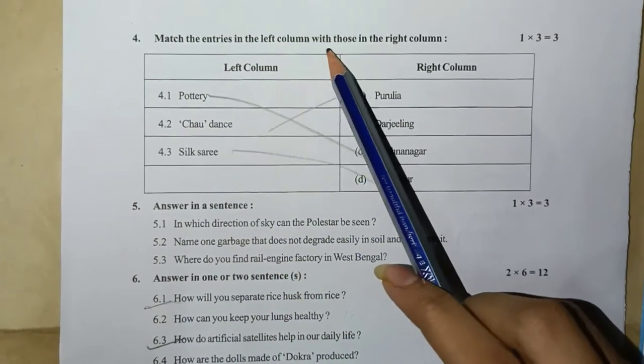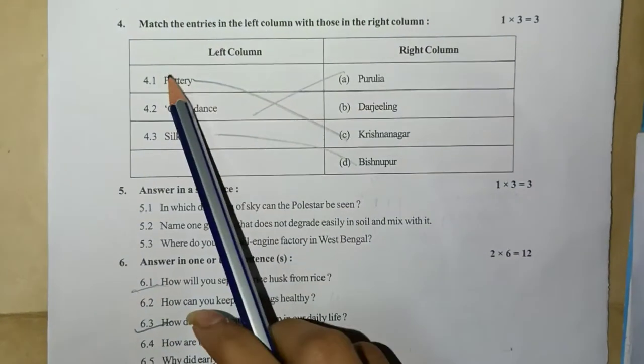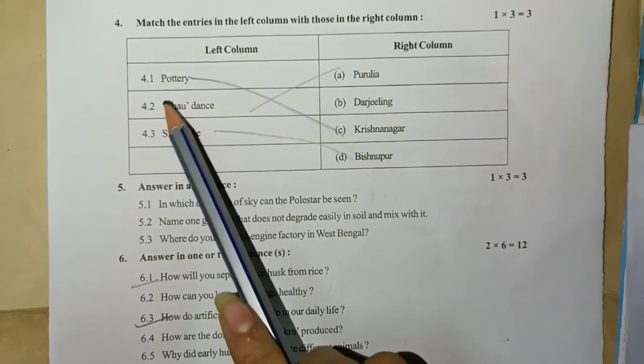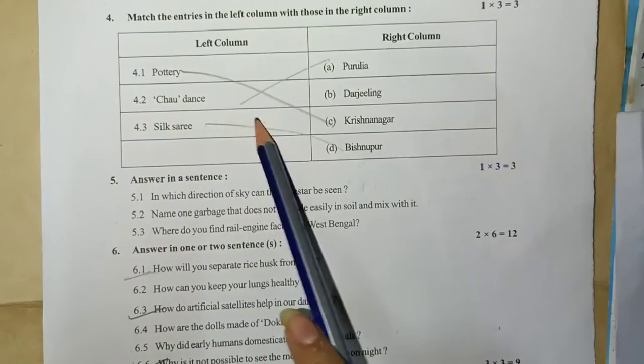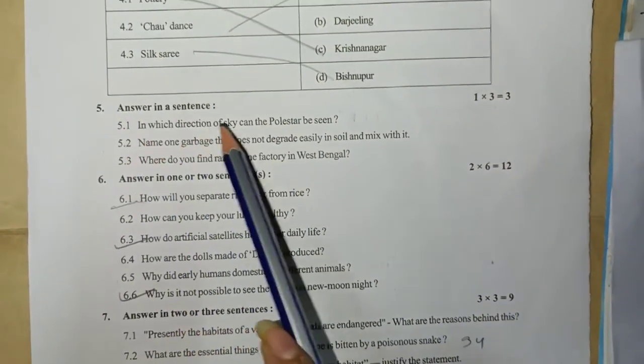Left column, right column: Pottery - Krishnanagar, Sholapith - Murshidabad, Silk sari - Vishnupur. Answer in a sentence: in which direction of sky can the pole star be seen?